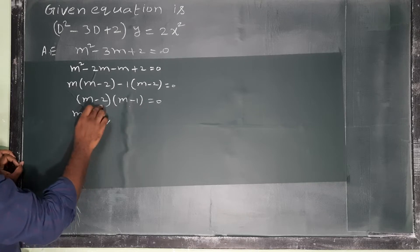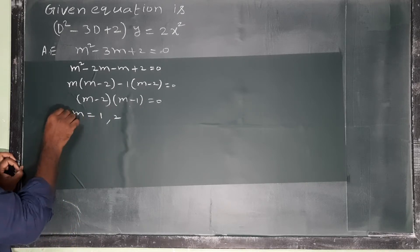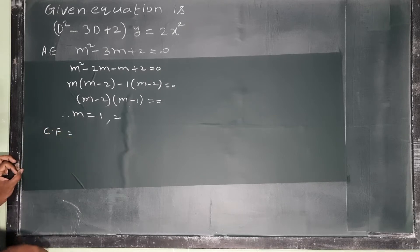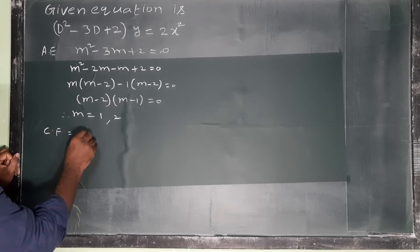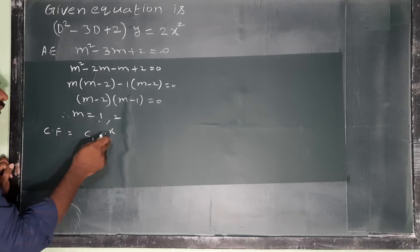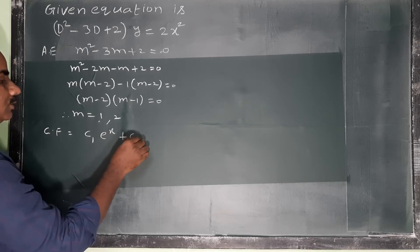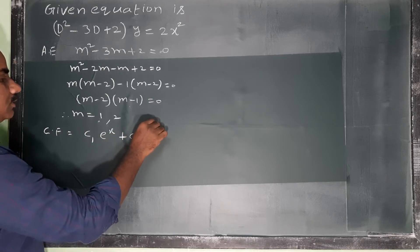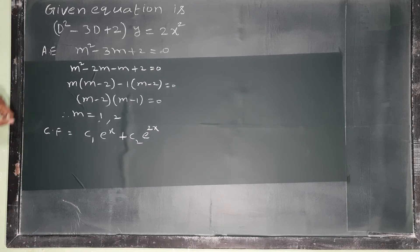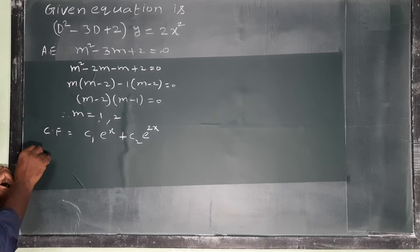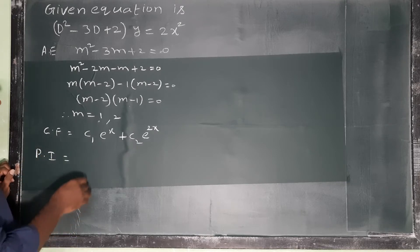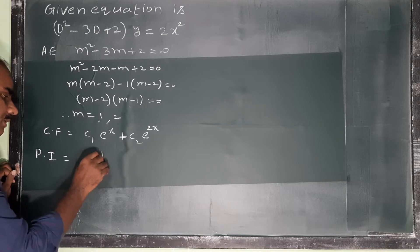Therefore m = 1 and m = 2. These are the values of m. Therefore the complementary function (CF) is equal to c₁eˣ + c₂e²ˣ. This is the complementary function for this differential equation.